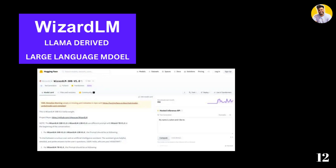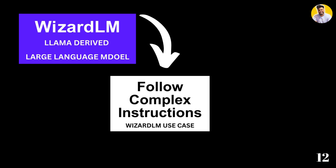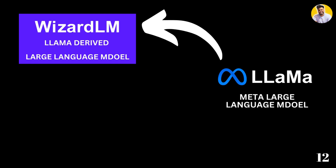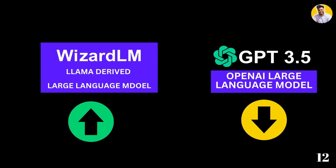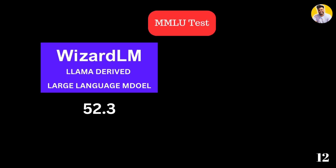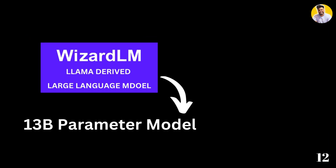The last large language model in the list is WizardLM, the next open-source model built to follow complex instructions. Also derived from the LLaMA model released by Meta, it can understand and rewrite the initial set of instructions into more complex instructions. Due to this approach, WizardLM performs much better on benchmarks, and users prefer its output over ChatGPT. In the MMLU test, it scores 52.3 — and it is just a 13 billion parameter model. If you're looking for a smaller model for complex instructions, WizardLM is your choice.